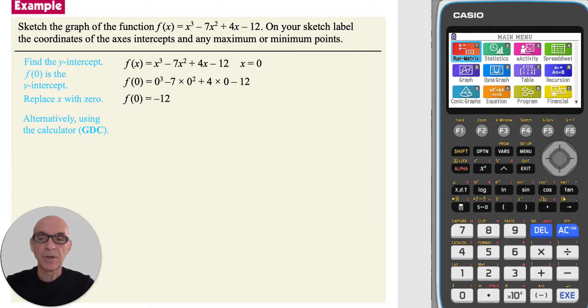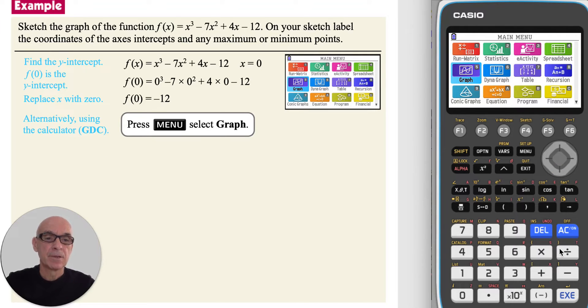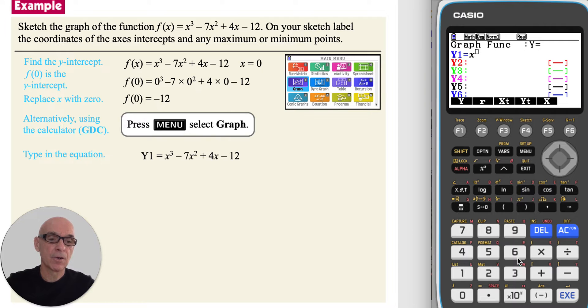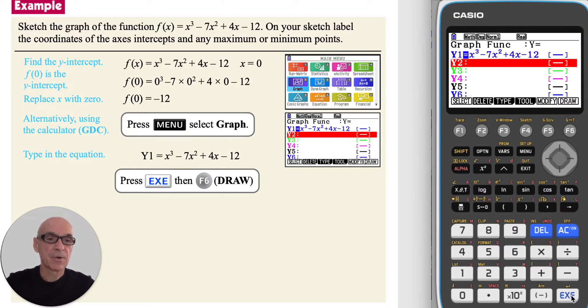Alternatively, we can perform this task on the calculator. From the main menu, select graph, pressing the x variable button, raising that to the power of 3, and then a right cursor to come down, then taking away 7, pressing the x button again, and then the squared button, plus 4, pressing the x button one more time, and then subtracting 12. Pressing execute to enter the equation.